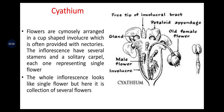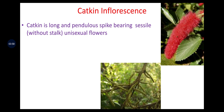In cyathium, flowers are cymosely arranged in a cup-shaped involucre which is often provided with nectaries. The inflorescence has several stamens and a solitary carpel, each one representing a single flower. The whole inflorescence looks like a single flower but is a collection of several flowers — a whole inflorescence looking like a single unit bearing several flowers is known as cyathium. In catkin inflorescence, there are also several flowers; it is a long and pendulous spike bearing sessile (without stalk) unisexual flowers.